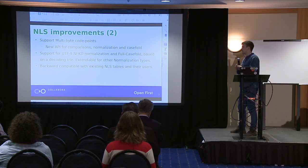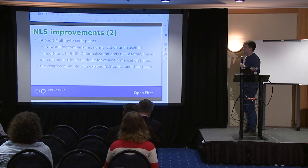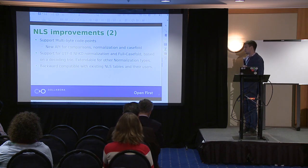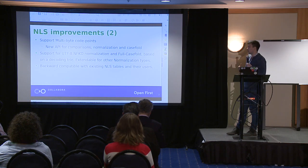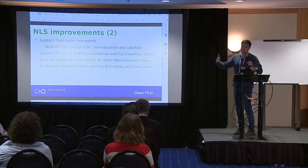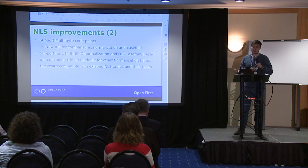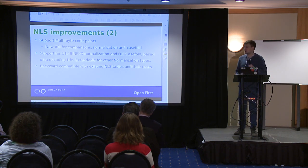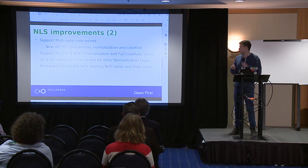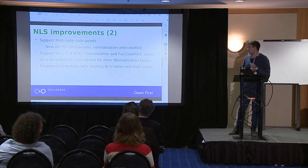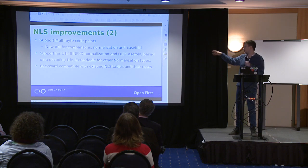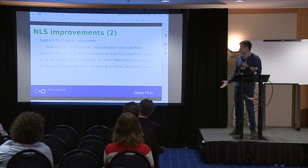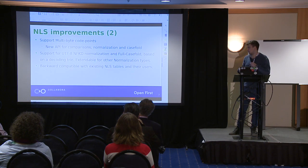The extension to the API also starts to consider multi-byte code points, so we have a new API for comparison which requires, for instance, the ability to handle two different length strings that are actually equivalent strings so they compare to the same result. It also provides interfaces for normalization and case folding directly to the file system, because it's going to have to use those for hashing.